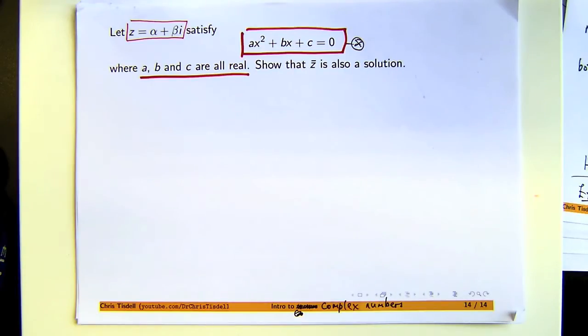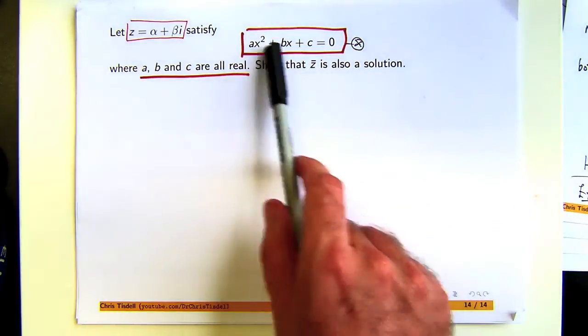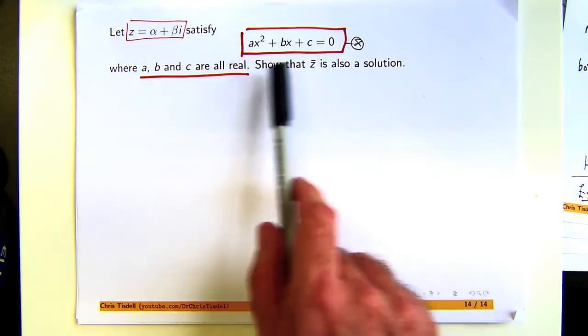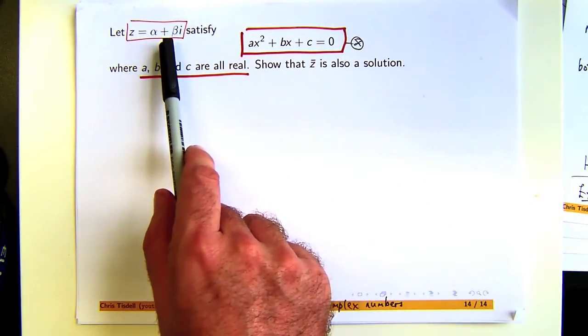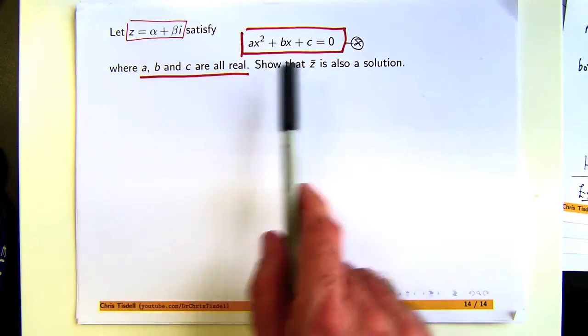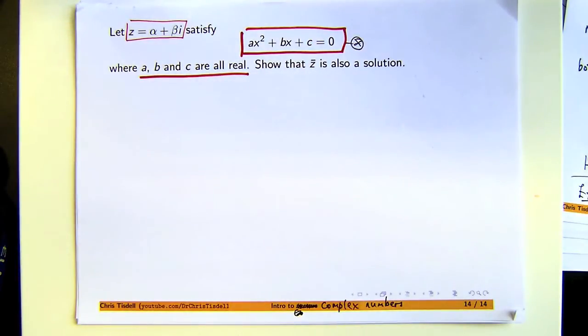On the surface, that might seem easy and kind of trivial, but why would you want to do that? Well, if you're solving equations and you have one solution, immediately you know the second solution. If you have one complex solution to a quadratic equation, then you can immediately write down a second solution, the conjugate. So it saves you time.